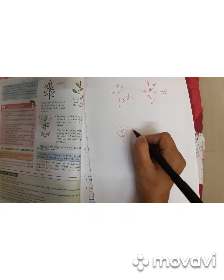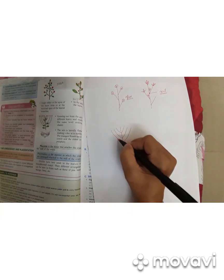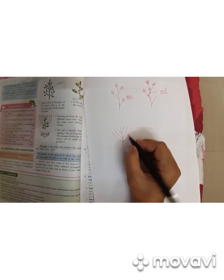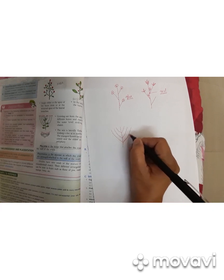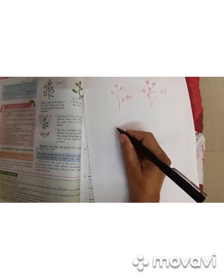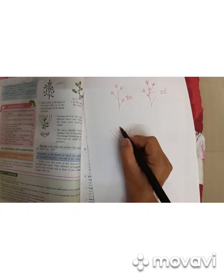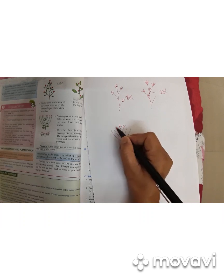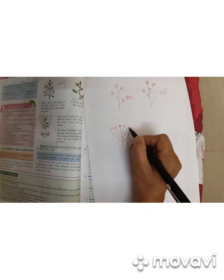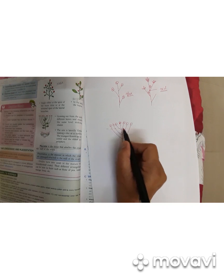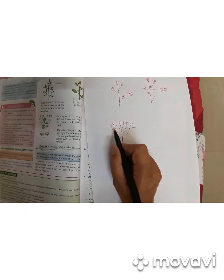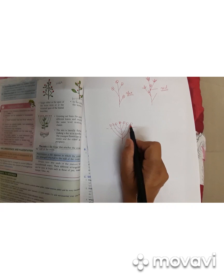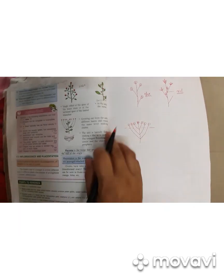The third inflorescence is when the flowers come and lie at the same level. Normally what happens is that the lower branches become taller and come at the tip of the main branch, and these also become taller so all the flowers come and lie at the same plane. This is called corymb. You will study the various names in higher classes, but in your book they have only given four types.